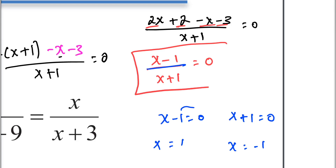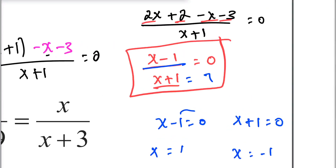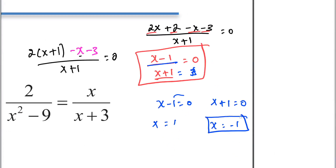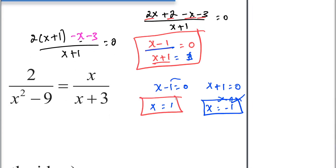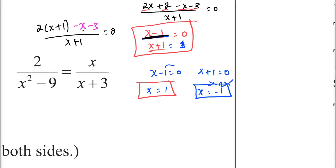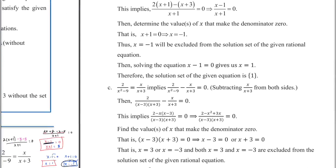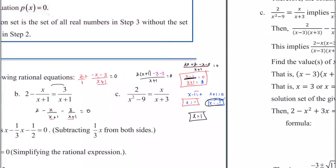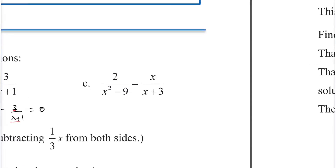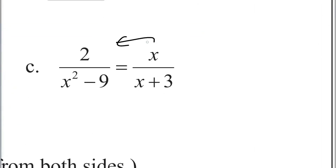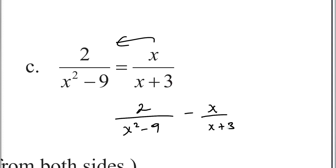x equals negative 1 makes the denominator x plus 1 equal to zero, which makes the expression undefined. So x equals negative 1 is not in the domain. When the numerator equals zero, the solution is x equals 1.